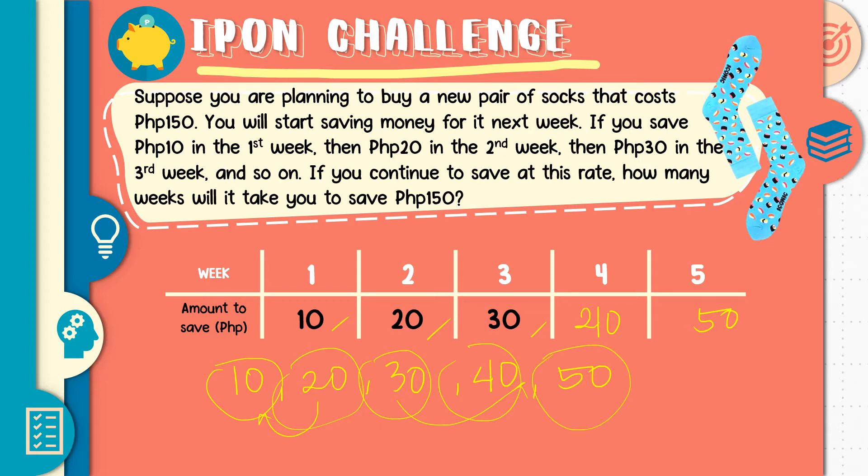Now observe our sequence. Paano naduduktungan yung bawat term? Ano bang kasunod dapat ni 50? Yes, 60. And how did you get 60? Very good. Nag-add lang tayo ng 10. So yun yung pattern natin. Plus 10 lang tayo ng plus 10 doon sa bawat term. And that is what we are going to discuss in this particular video. What kind of sequence is that?